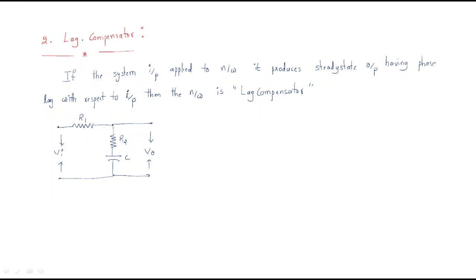In this session we will discuss the lag compensator. The name itself implies lagging — the output always lags the input. If a network is applied with an input voltage and it produces a steady-state output having a phase lag with respect to the input, then the network is called the lag compensator.